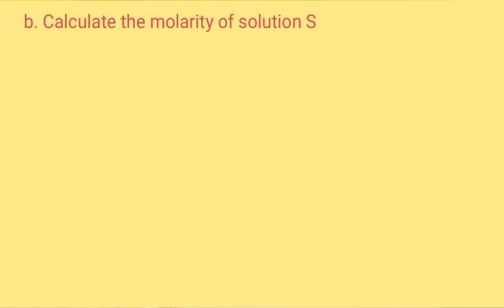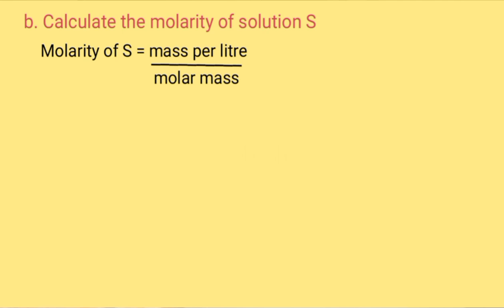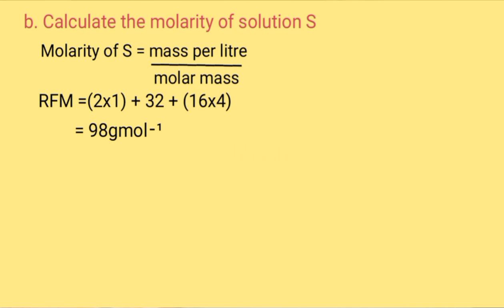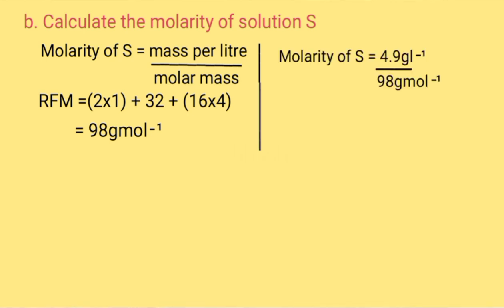Calculate the molarity of solution S. Solution S is the standard solution, so molarity equals mass per liter divided by molar mass. The RFM of sulfuric acid is (2×1) + 32 + (16×4) = 98 g/mol. Therefore molarity equals 4.9 g/dm³ divided by 98 g/mol, which equals 0.05 mol/dm³, or 0.05 molar.